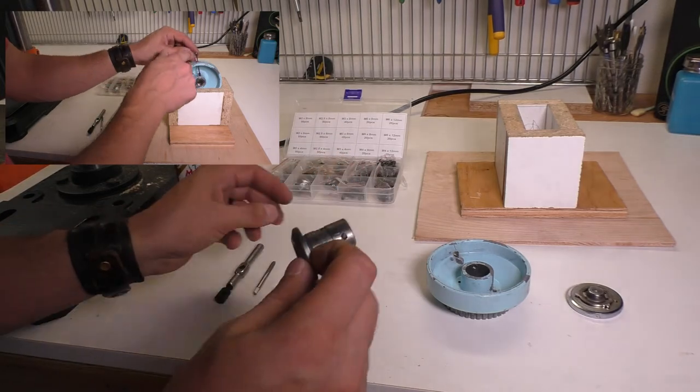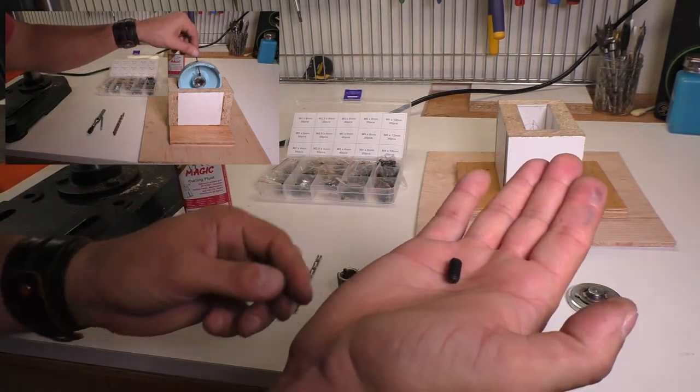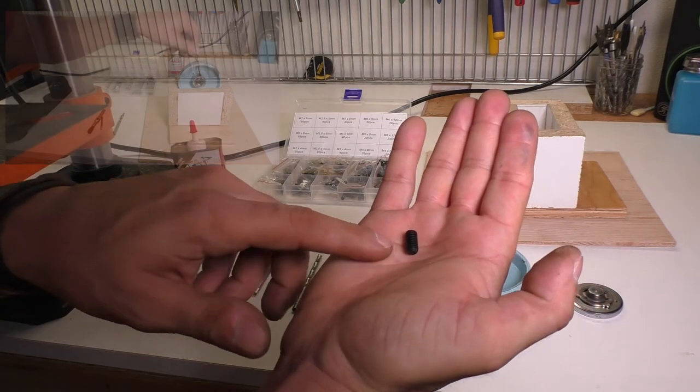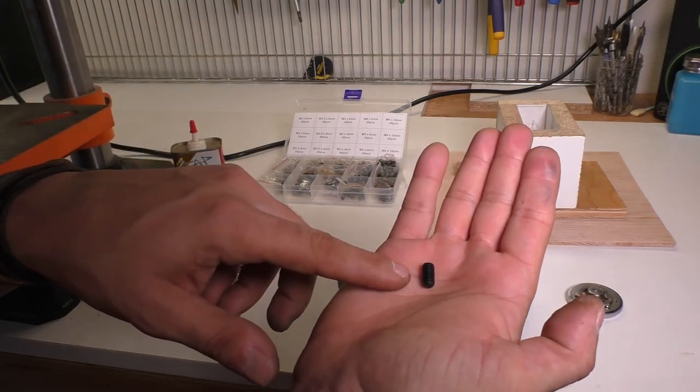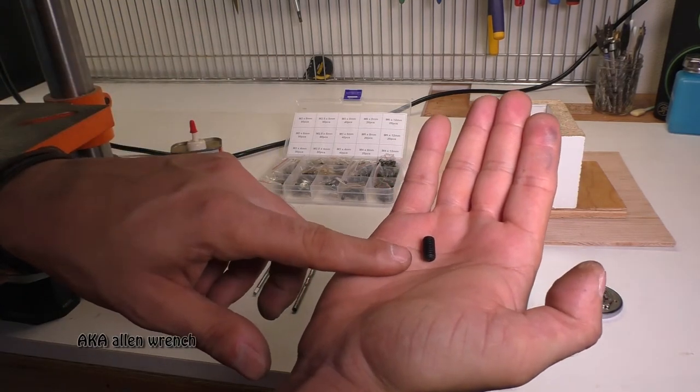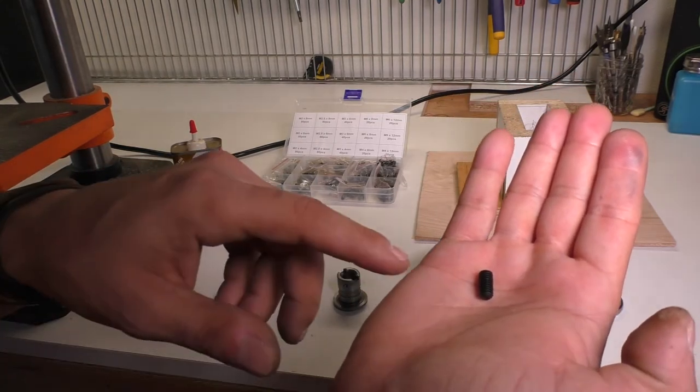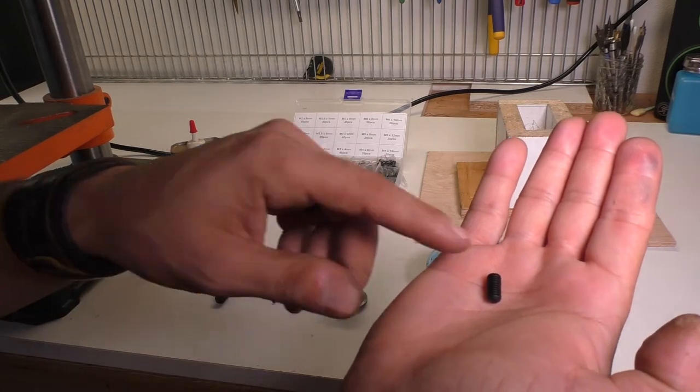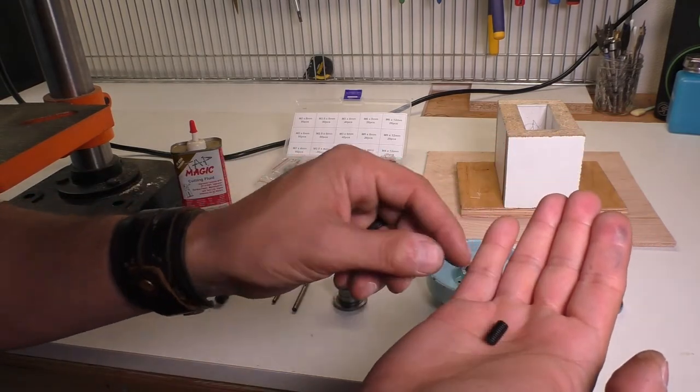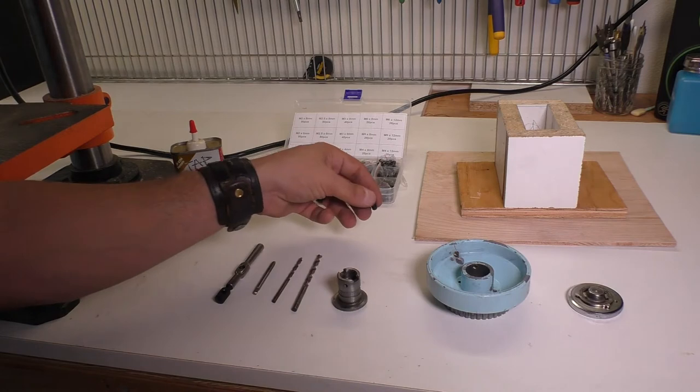Now a grub screw is sort of like a roll pin, except it just screws in with a hex bit on the top. This is an oversized one, and not the size that I actually used. This is an M6, but I wanted to show you what it looked like. The size that I ended up using is an M4 8 millimeter.